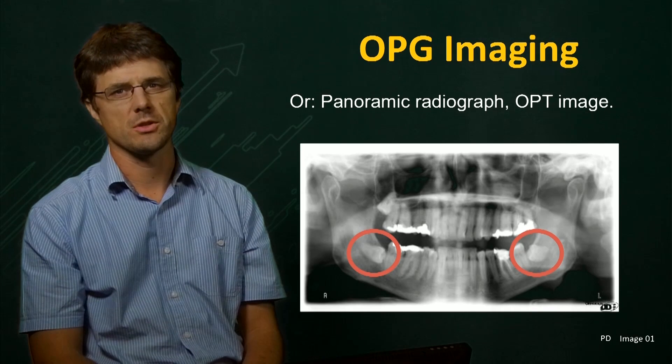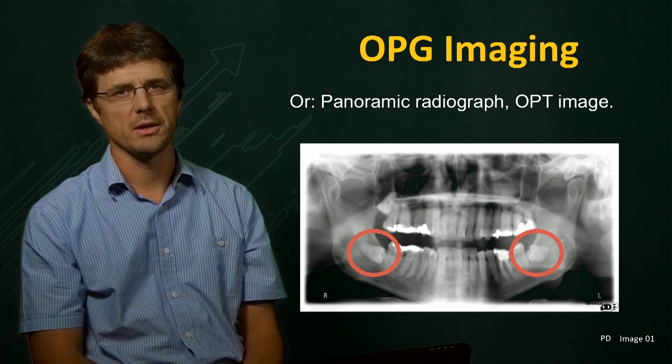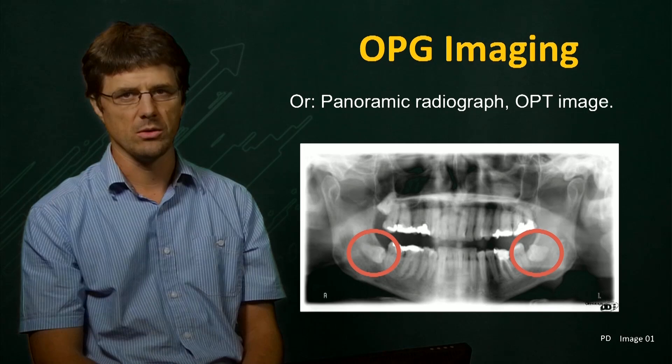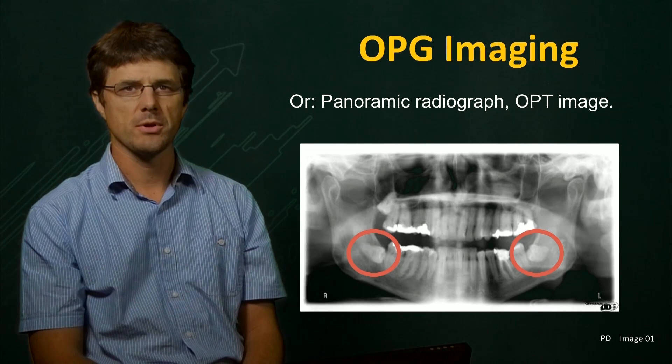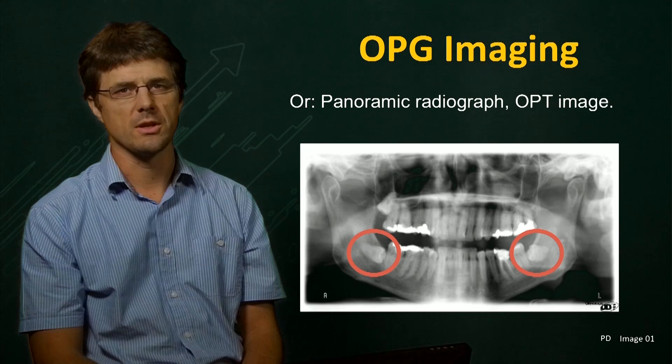Note that the mandibular structures and teeth are well defined while the background features such as the skull largely have reduced clarity. This is made possible by the acquisition methods used in OPG.